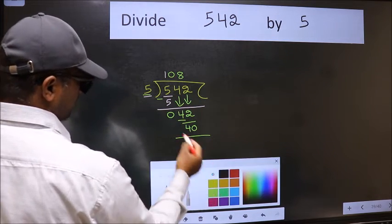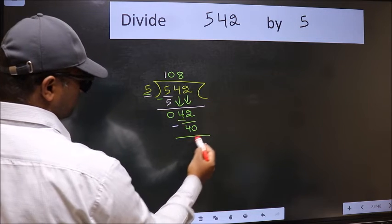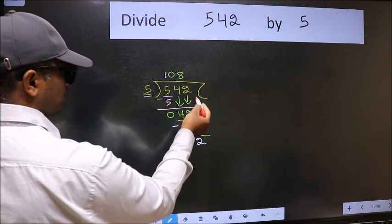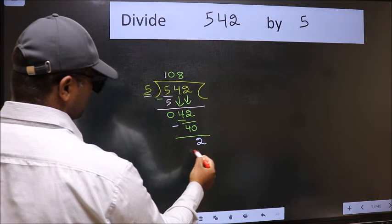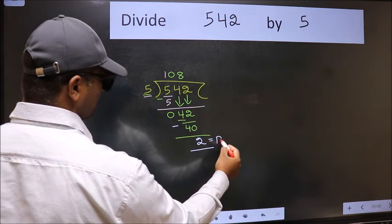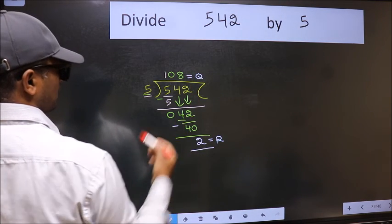Now, we should subtract. We get 2. No more numbers to bring it down. So, we stop here. This is our remainder and this is our quotient.